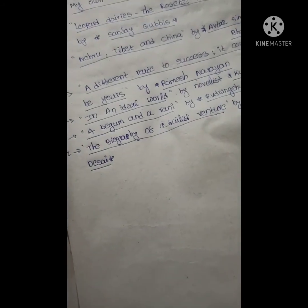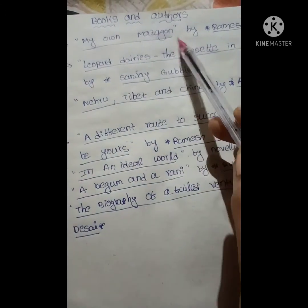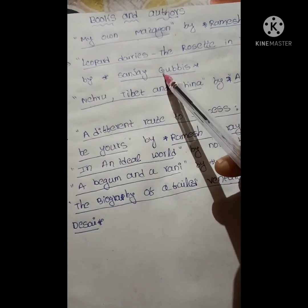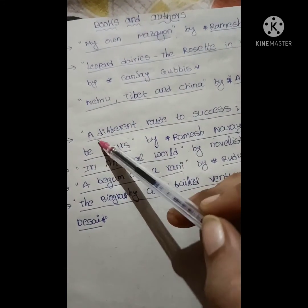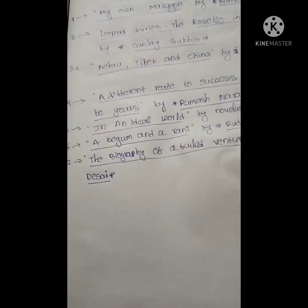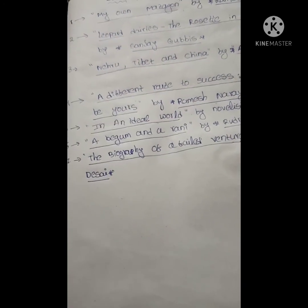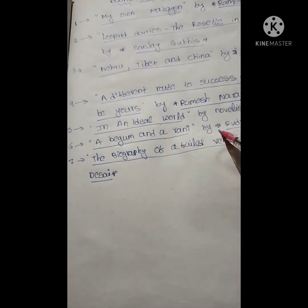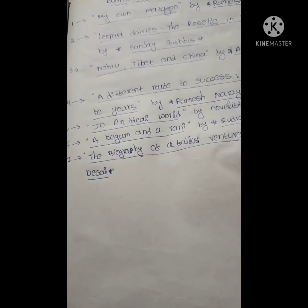Next we go to books and others. First is 'My Own Magic' authored by Ramesh Babu. Second is 'Leopold Diaries: The Reset in India' by Sanjay Gubbi. Third is 'Nehru, Tibet and China' by Avtar Singh Bhasin. Fourth is 'A Different Route to Success' by Ramesh Narayan. Fifth is 'In an Ideal World' by Kunal Basu, who is a novelist. Sixth is 'A Begum and a Rani' authored by Rudra Angsha Mukherjee.